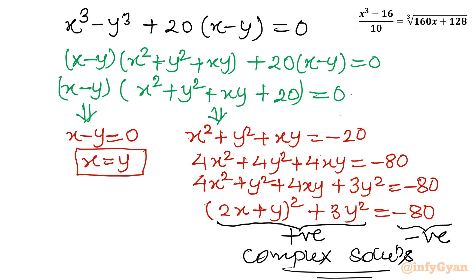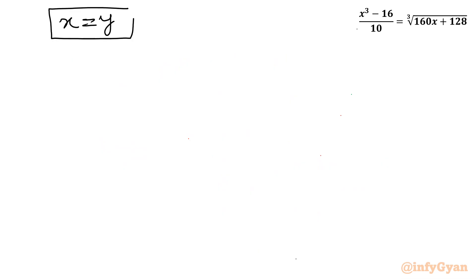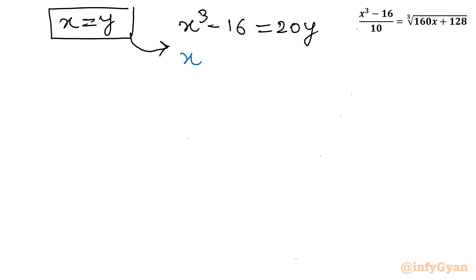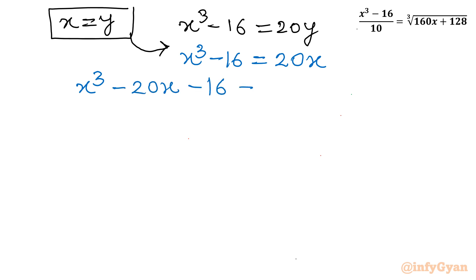The only accepted solution is x = y. Using this with our original equation x³ - 16 = 20y and substituting y = x, we get x³ - 16 = 20x. Rearranging, we frame the cubic equation x³ - 20x - 16 = 0.